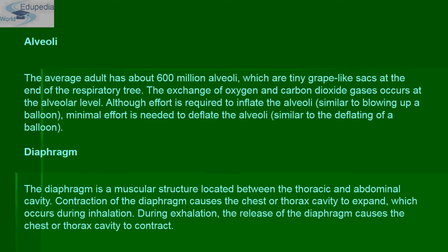Then come air sacs, or alveoli. There are about 600 million alveoli found in an adult on average. They are tiny grape-like sacs at the end of the respiratory tree. The exchange of oxygen and carbon dioxide gases occurs at the alveolar level. Effort is required to inflate the alveoli, but minimal effort is needed to deflate them.